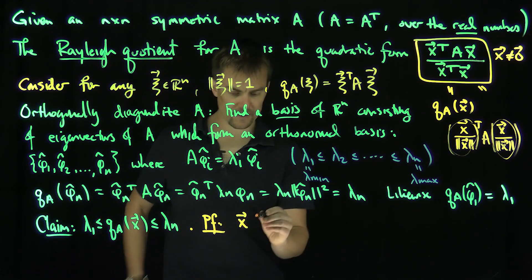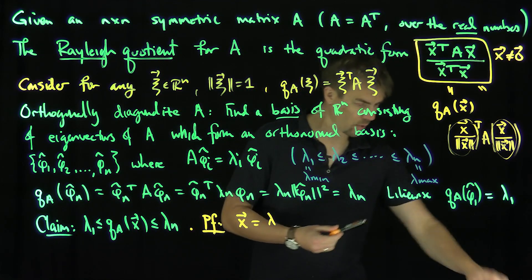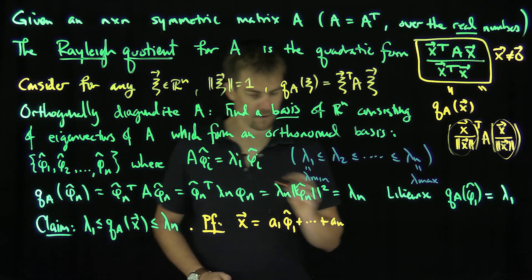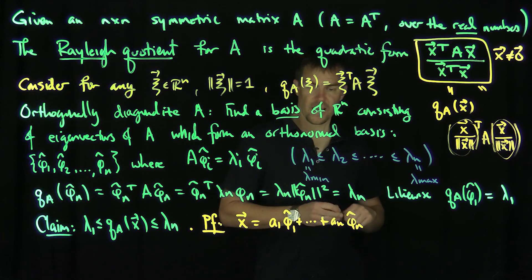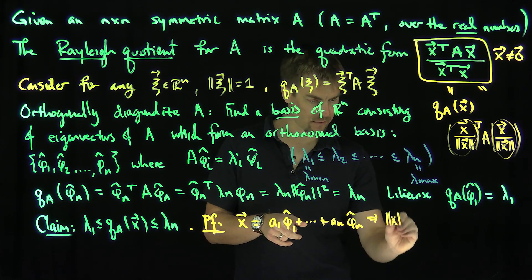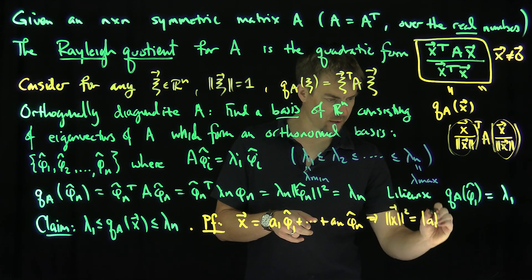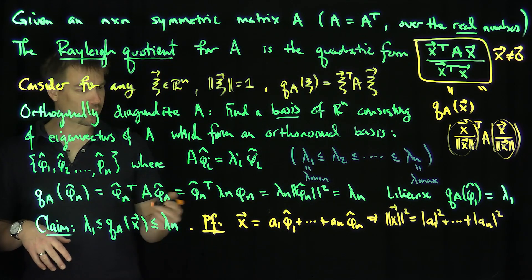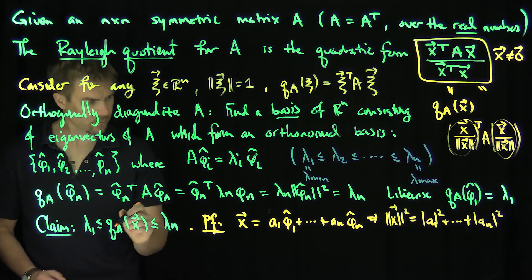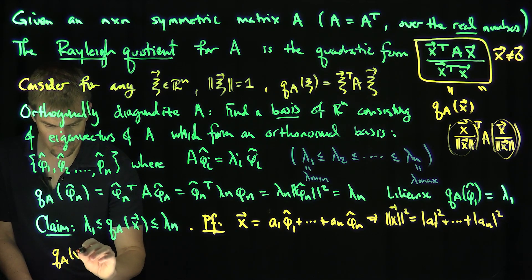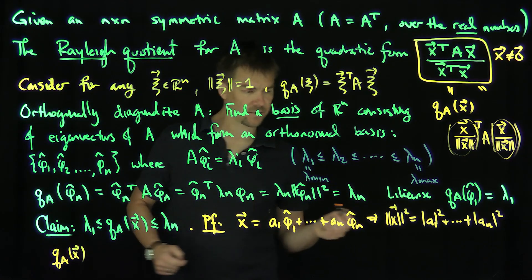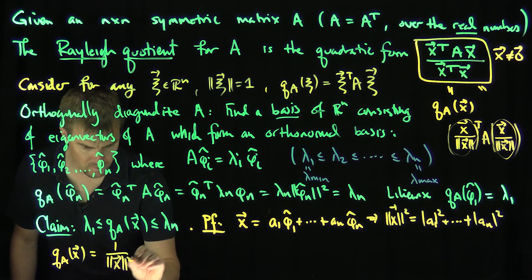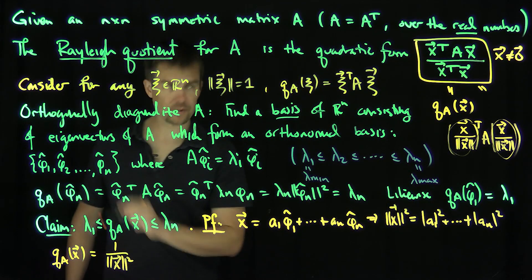Proof of the claim: write x = a₁ φ̂₁ + … + aₙ φ̂ₙ. Since it is an orthonormal basis, the Pythagorean theorem gives ‖x‖² = a₁² + … + aₙ². Then QA(x) equals (1 / ‖x‖²) times x · Ax, where the factor 1/‖x‖² comes from x transpose x being the length squared.